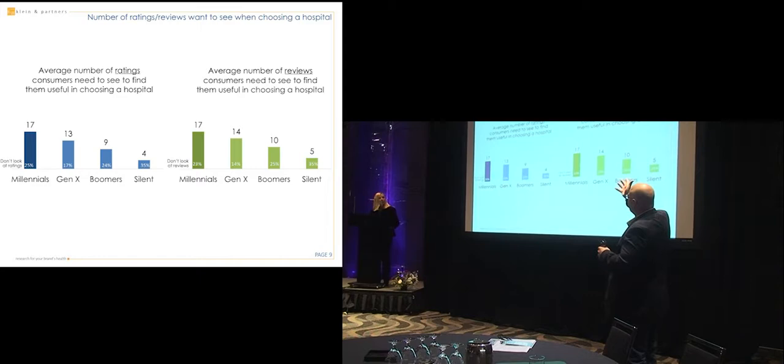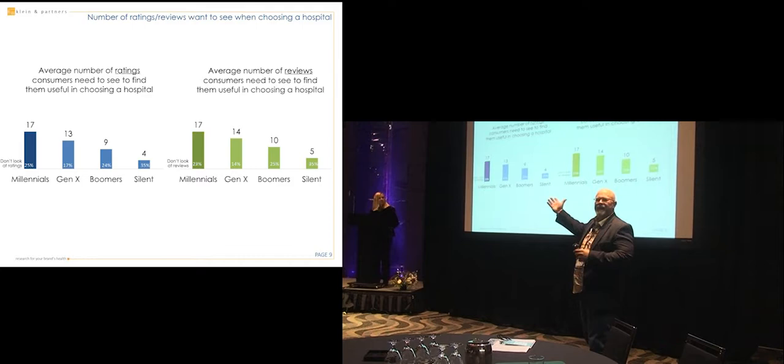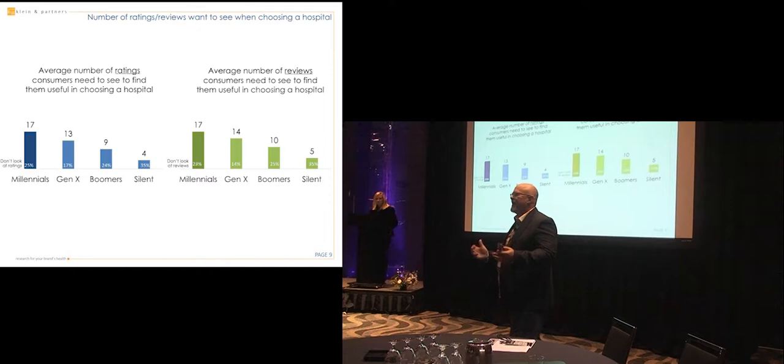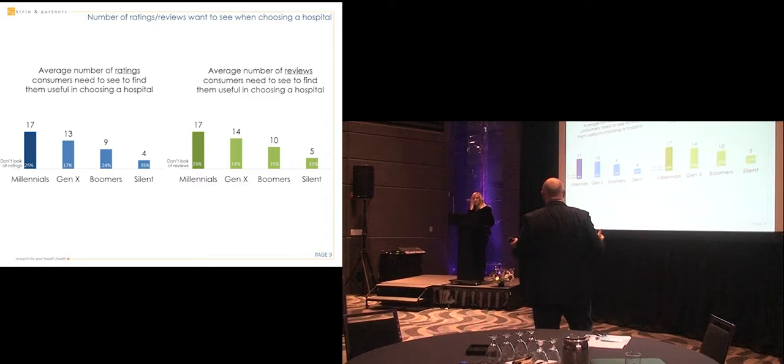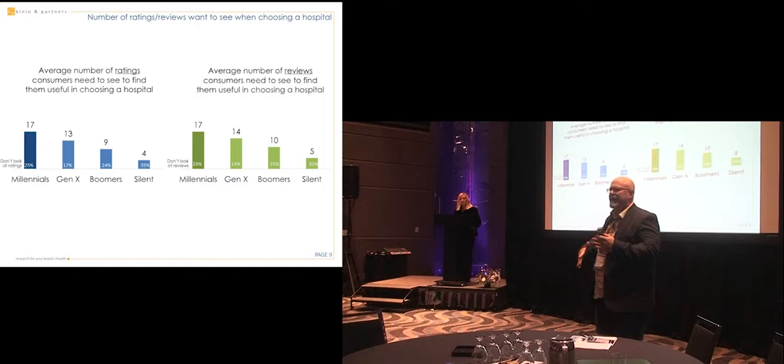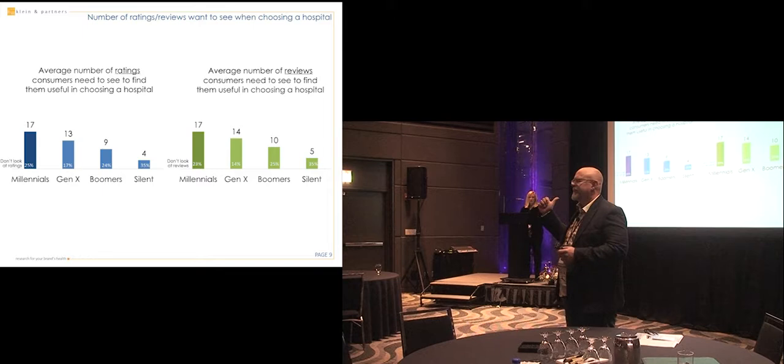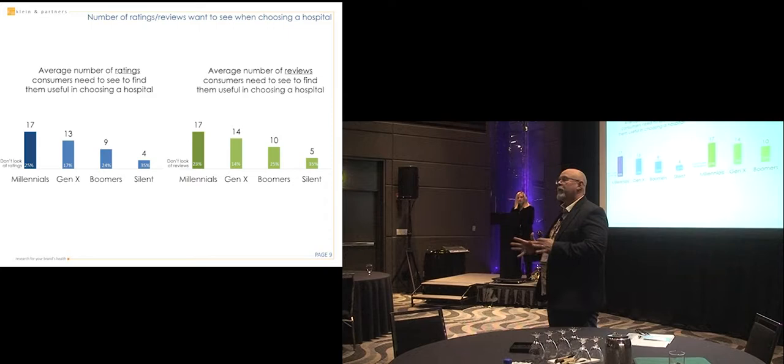Average number of ratings consumers need to see to find them useful in choosing a hospital. And it's not as many as you think. You don't need hundreds and hundreds. I mean, we're looking at, with millennials, 17. So if you've got 15 to 20 ratings, especially for millennials who are doing the most looking, you've got that. So the reason I put that in there is a lot of clients are like, oh, I know that with Hotels.com or Travelocity, they've got thousands of reviews. We're never going to get that many. And I'm like, well, maybe you don't need that many.